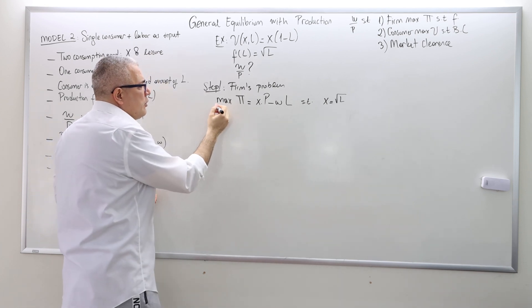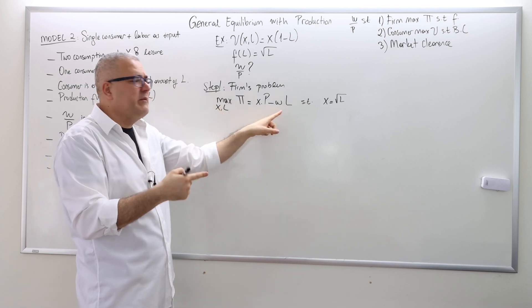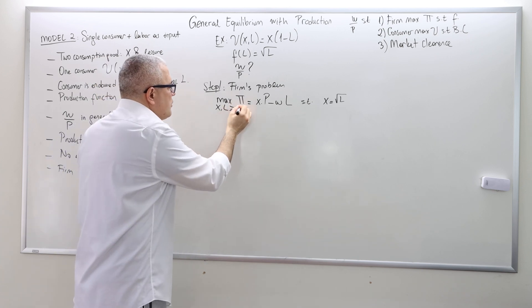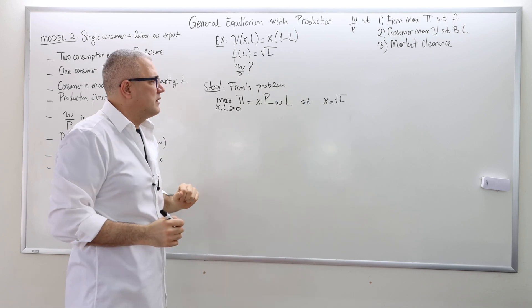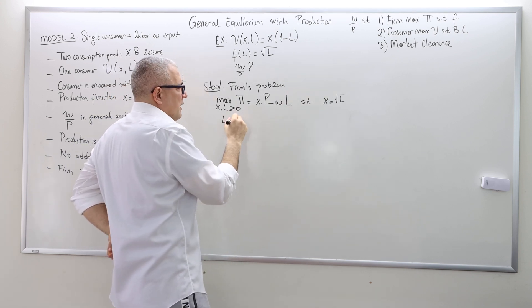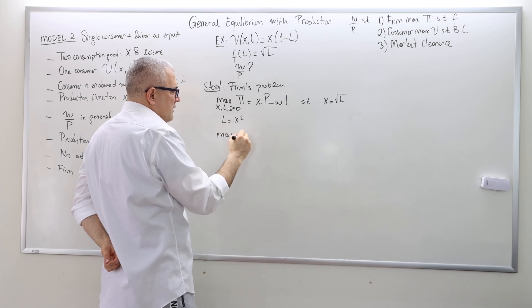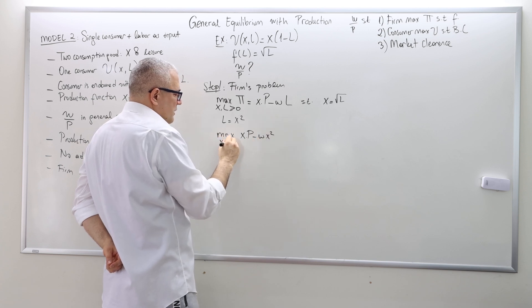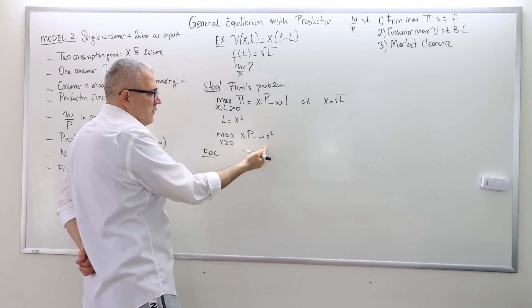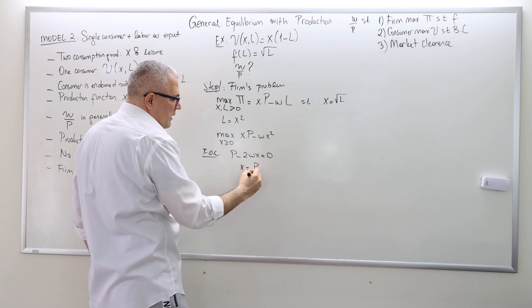What do I choose? I choose X and L — how many hours of labor and how much output to produce. I am supplying X and demanding L: as a firm, I demand labor; consumers will supply labor. Use the substitution method: take the square of both sides, so L equals X squared. Whenever you see L, plug in X squared. The maximization problem becomes: maximize X times P minus W times X squared. Taking the derivative with respect to X, setting it equal to zero: P minus 2WX equals zero, and hence X equals P divided by 2W.